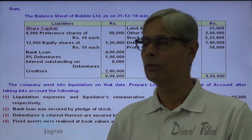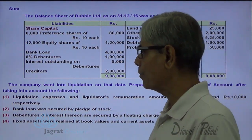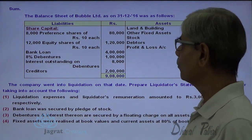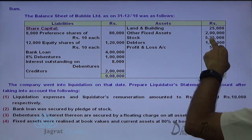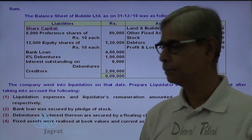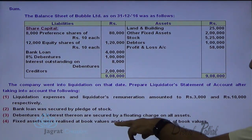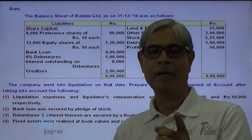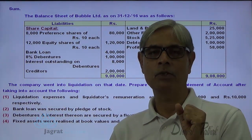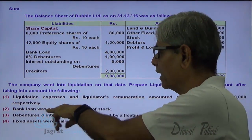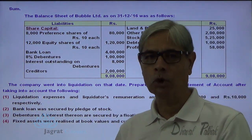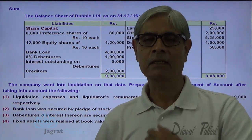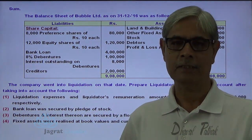Make first payment of fully secured creditors — bank loan secured by pledge of stock. Stock is 5,000,000. Current assets realize 80% of book value, so 5,000,000 into 80% is the realized value of stock. From that you are required to pay in priority the bank loan, which is 4 lakhs, so they are considered fully secured creditors.